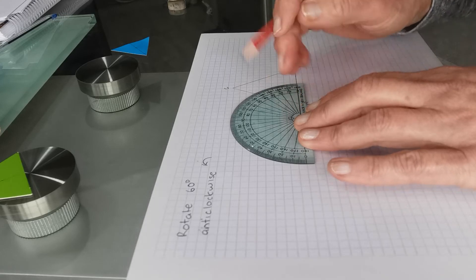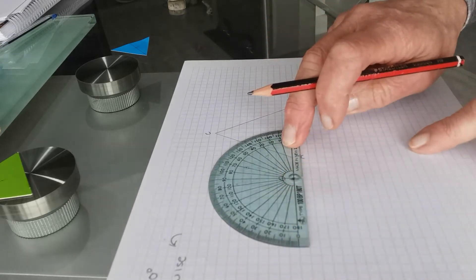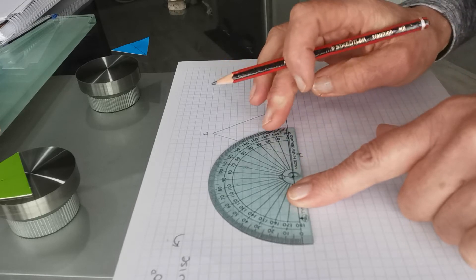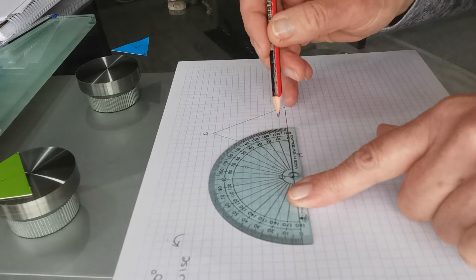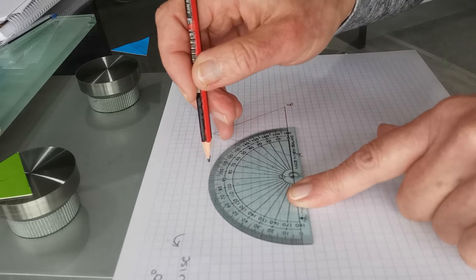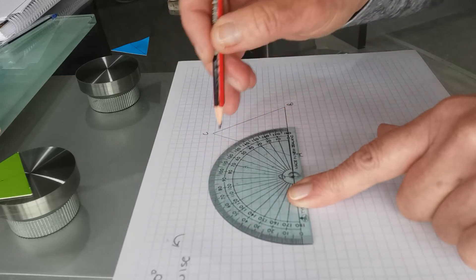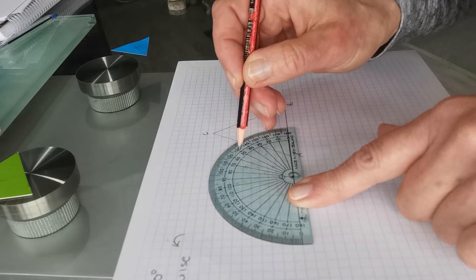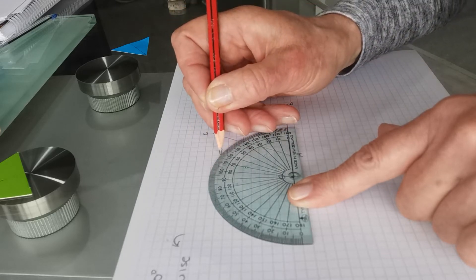We put the center of the protractor on the center of rotation and this direction up here is anti-clockwise. So 0, 10, 20, 30, 40, 50, 60. Put a dot.